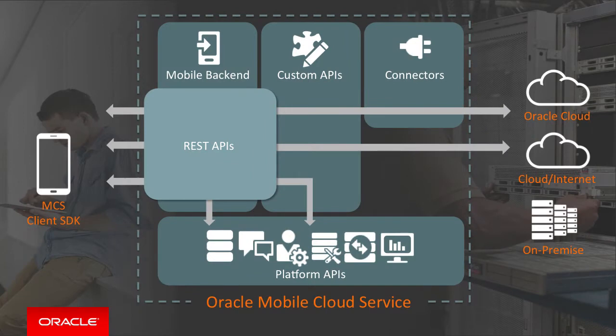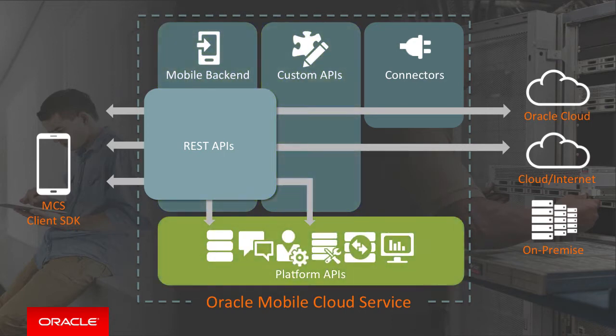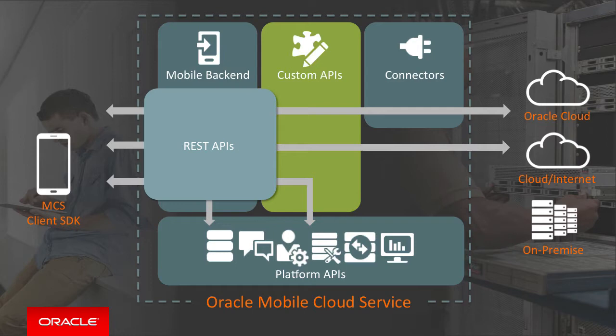Overall, MCS has two sets of APIs that can be published to the outside world through the MCS mobile backends: custom APIs and platform APIs. Custom APIs coded to Node.js give you the flexibility and freedom to build practically whatever services you want for your mobile applications. Using Node.js, you can expose, shape, and tailor any of the existing enterprise system services specifically optimized for your mobile applications to consume.